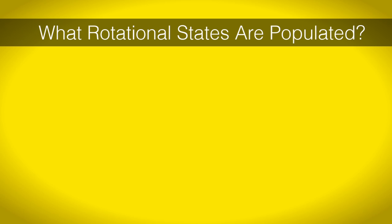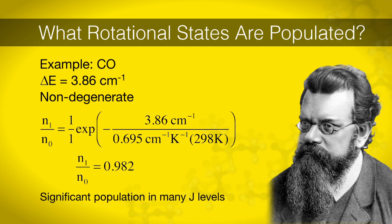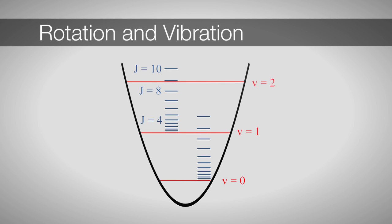If we want to know what levels are expected to have population and therefore appear in our spectrum, we return to the Boltzmann distribution. However, we recognize that the energy spacings are much smaller than the vibrational spacings. The Boltzmann distribution tells us that there is a greater amount of molecules in an excited rotational state when compared to vibrations. Again, let's use carbon monoxide as an example. In carbon monoxide, the ground and first excited rotational states are separated by 3.86 wavenumbers. From this, we find a ratio of 0.982. This means the population of these two states are very similar and we should expect to see multiple J levels as starting points for transitions.